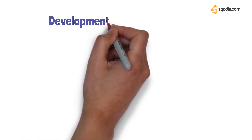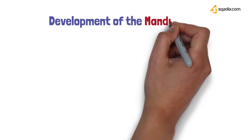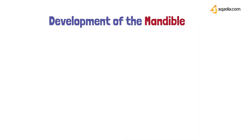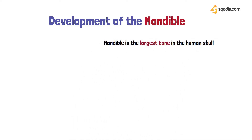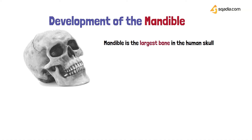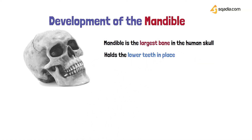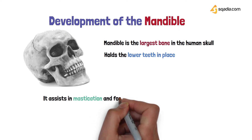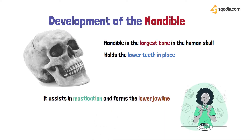Welcome to scadia.com. Today we'll be talking about how the development of the mandible takes place. The mandible is the largest bone in the human skull and it holds the lower teeth in place. It also assists in mastication and it forms the lower jawline. To understand the development, let's first go through the anatomy of the mandible.